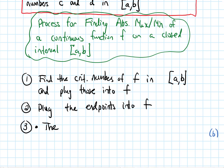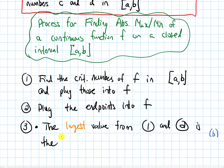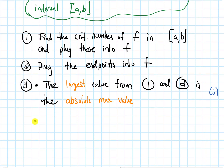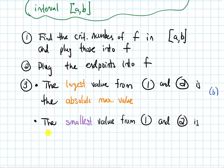Those are the only places — the critical numbers and the endpoints — where the absolute max and min could possibly occur. Once you've plugged in all of these candidates, the largest value from steps 1 and 2 is the absolute maximum value, and the smallest value from steps 1 and 2 is the absolute minimum value. Next, let's look at an example to see how this works.